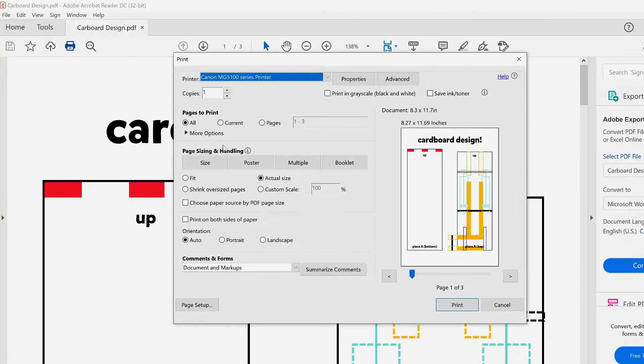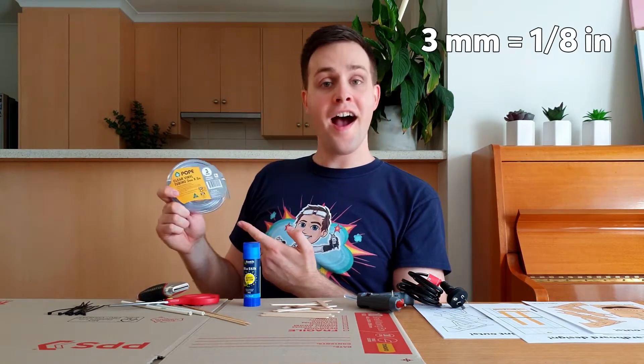But make sure you select print actual size when printing these documents. You'll also need a large cardboard box, 10 pop sticks, 3 skewers, 2 paper straws, 10 zip ties, a hot glue gun, a glue stick, scissors, or a Stanley knife, and 2m of 3mm thick plastic tube.